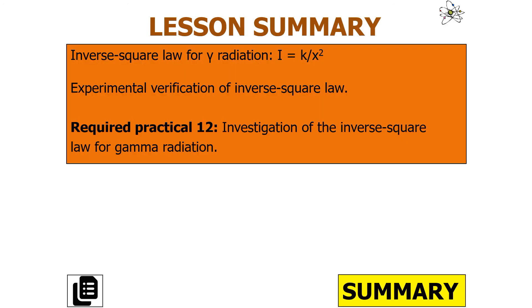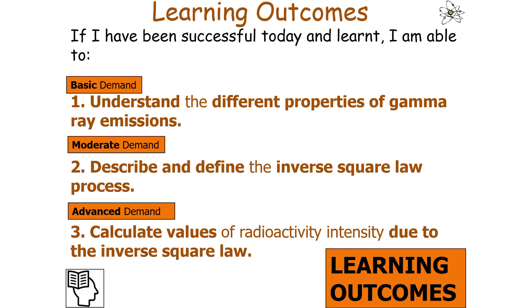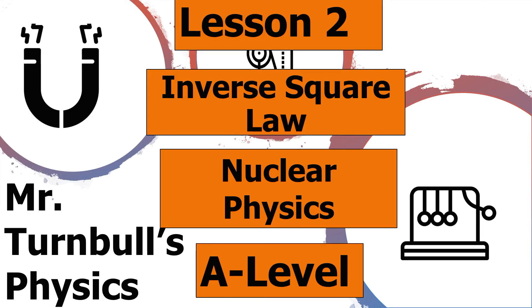In today's lesson we've learned that the inverse square law for gamma radiation is I = K/X², and we know the experimental verification of the inverse square law. We should now be able to understand the different properties of gamma ray emissions, describe and define the inverse square law process, and calculate values of radioactive intensity. I hope you've enjoyed today's lesson on the inverse square law, part of the nuclear physics topic in AQA A-level physics. Thank you very much for listening, and have a lovely day.